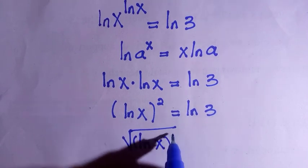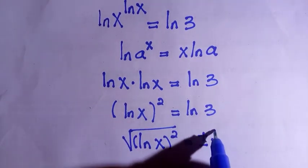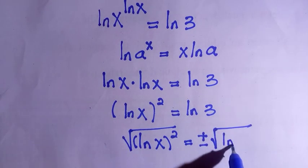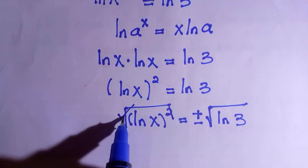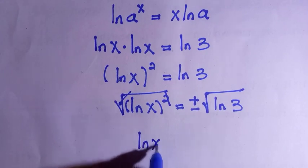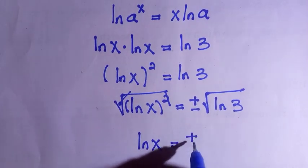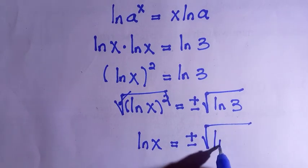And here we have the root of ln x raised to power 2 equals to plus or minus the root of ln 3. So I use plus or minus, whenever we take the square root of both sides we introduce plus or minus. Then we have ln x equals to plus or minus the root of ln 3.